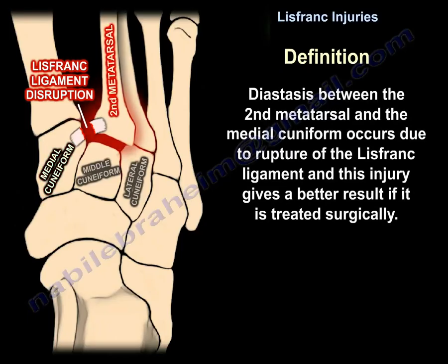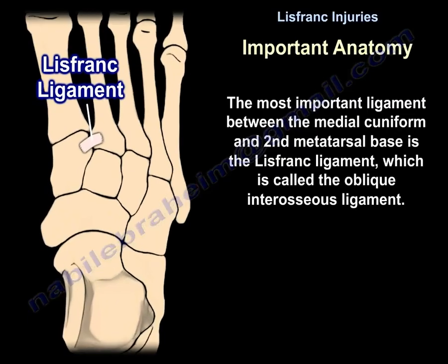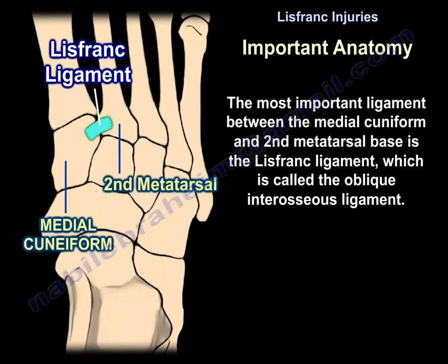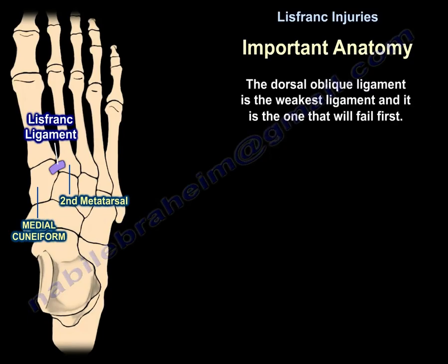Diastasis between the second metatarsal and the medial cuneiform occurs due to rupture of the Lisfranc ligament, and this injury gives a better result if treated surgically. The most important ligament between the medial cuneiform and the second metatarsal base is the Lisfranc ligament, also called the oblique interosseous ligament. The plantar and dorsal oblique ligaments contribute some stability, but not as much. The dorsal ligament is the weakest and will fail first.